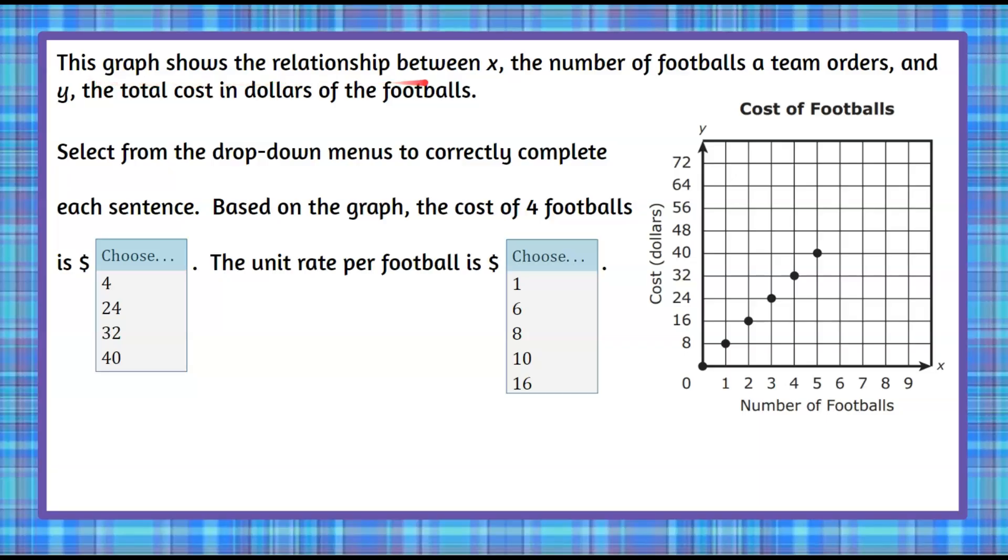We have this graph that shows the relationship between x, the number of footballs a team orders, and y, the total cost in dollars of the footballs. You're asked to select from the drop-down menus to correctly complete each sentence. Based on the graph, the cost of four footballs is choose. The unit rate per football is and you choose.